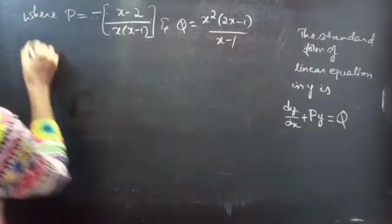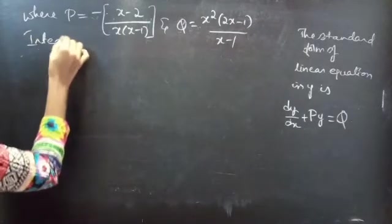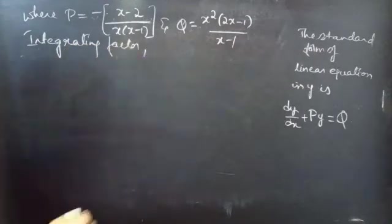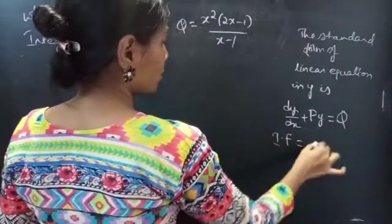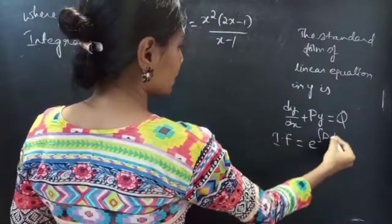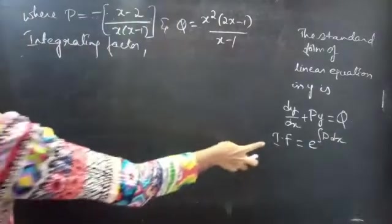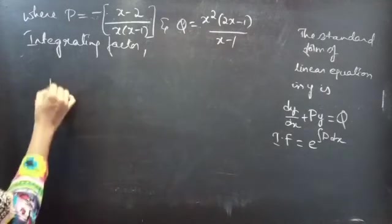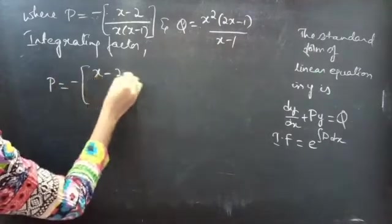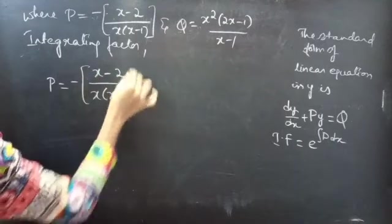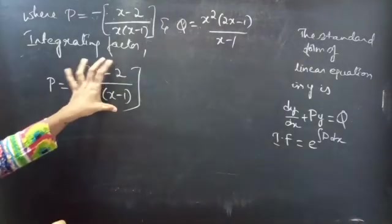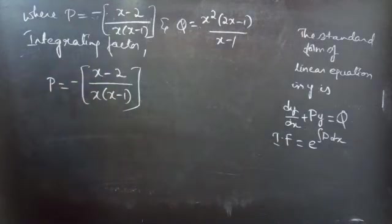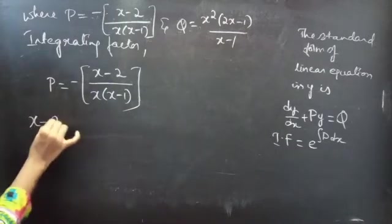By comparing the reduced equation to the standard form, we get P and Q, where P equals minus(x minus 2) divided by x(x minus 1) and Q equals x squared times (2x minus 1) divided by (x minus 1). Here P and Q are functions of x only. Now we need to find the integrating factor. The integrating factor of a linear equation in y is given by e to the power of integral P dx.